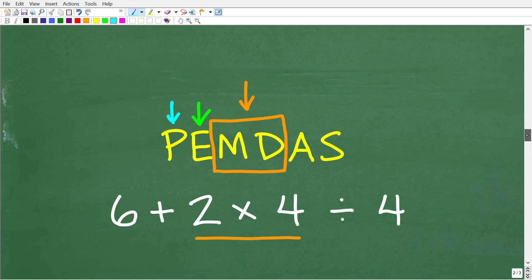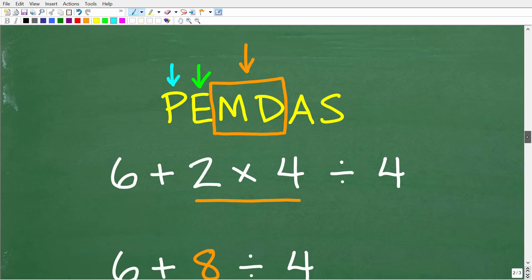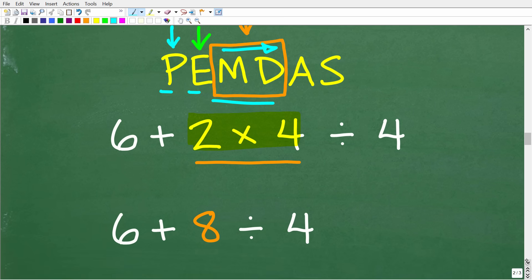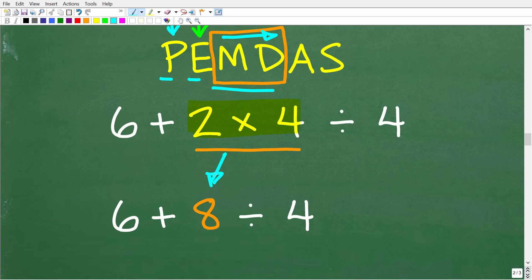And again, we're just kind of working this PEMDAS checklist from left to right. So we took care of all parentheses, all exponents and powers. So now we're down to multiplication or division. So if our problem has any multiplication or division, we're going to do whatever we see first from left to right. So as we scan the problem, we see multiplication before division. So 2 times 4 is, of course, 8.